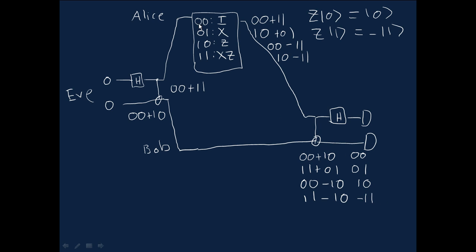And in the final case, you actually get, you know, the probability of getting the 1, 1 outcome is just minus 1 squared, the amplitude squared, which is 1. So you definitely get 1, 1, which is, again, correct.